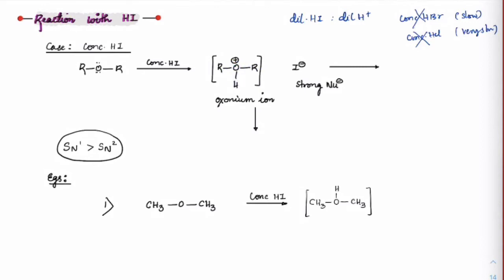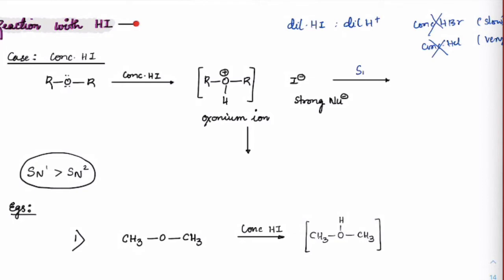If we have an ROR group and treat it with concentrated HI, first an oxonium ion is formed. Then I⁻, which is a strong nucleophile, attacks on R. This attack can happen by SN2 or SN1 mechanism. For SN1, we expect either a secondary or tertiary carbon. For secondary, tertiary, allylic, and benzylic cases, both SN1 and SN2 happen but SN1 is more favored because its rate is faster.